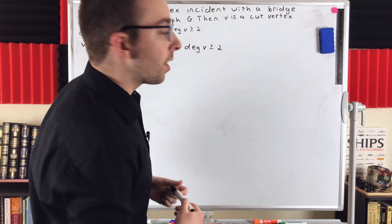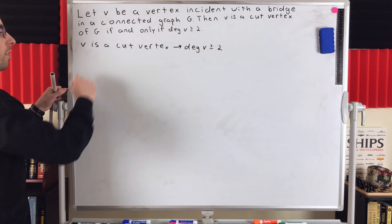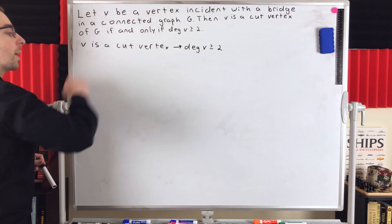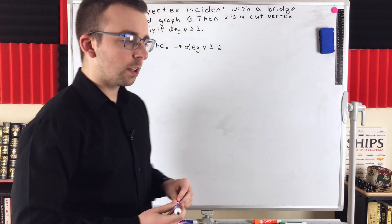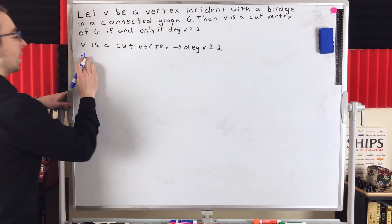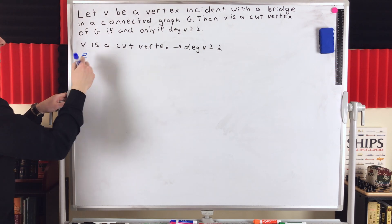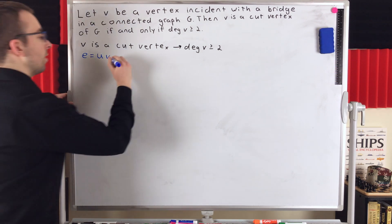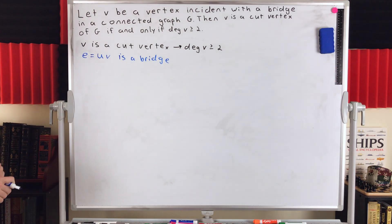For the contrapositive proof, let's name our bridge E with end vertices U and V — so E = UV is a bridge of our connected graph G. We're assuming the degree of V is less than 2. The only two possibilities are that the degree of V equals 0 or equals 1. We know the degree of V is not 0, because V is adjacent to U. So the only possibility is that the degree of V equals 1.